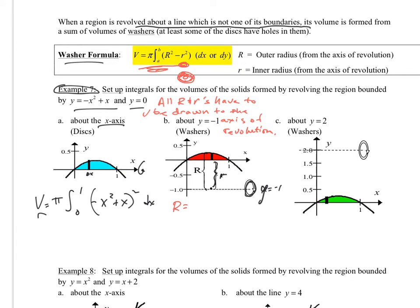So that'd be negative x squared plus x minus negative one. That would be my top minus my bottom, like we did in the previous unit. Little r is going to be top minus bottom two. So it would be zero minus negative one, which would be one.